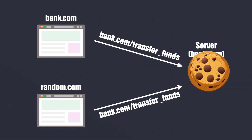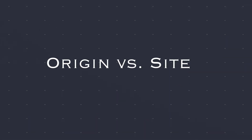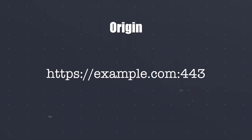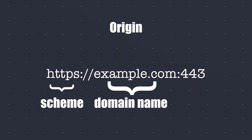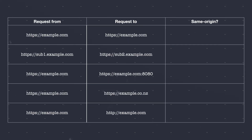The reason is that the browser attaches cookies to any request made to the target site, even if it is coming from a different origin. But what do we actually mean by origin and site? Let's first understand what an origin is. Two URIs have the same origin if they have the same scheme, same host, and same port.